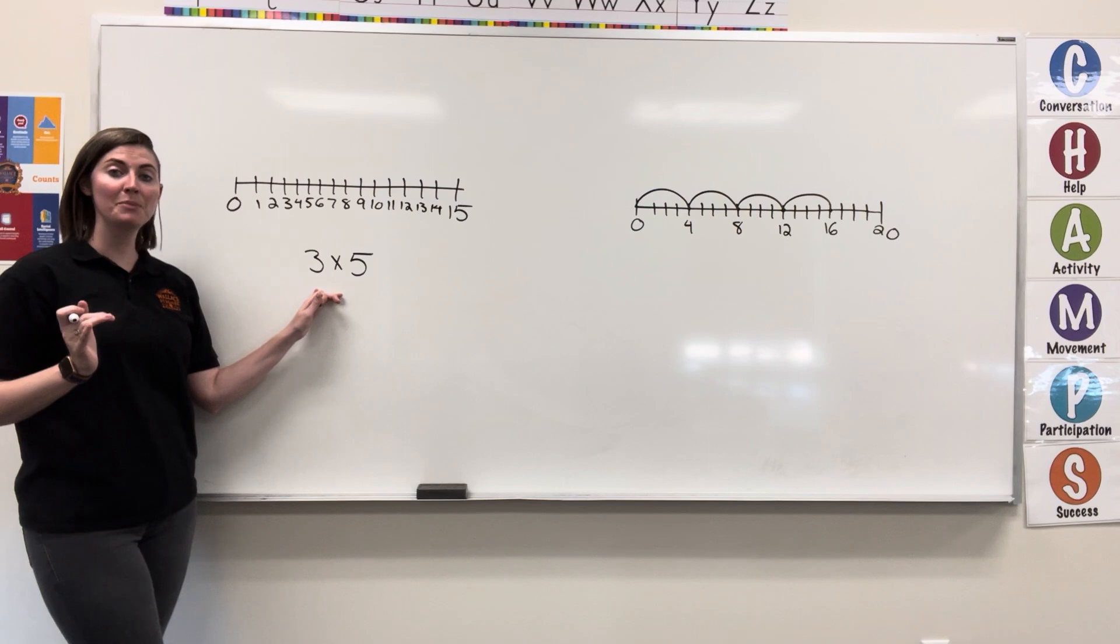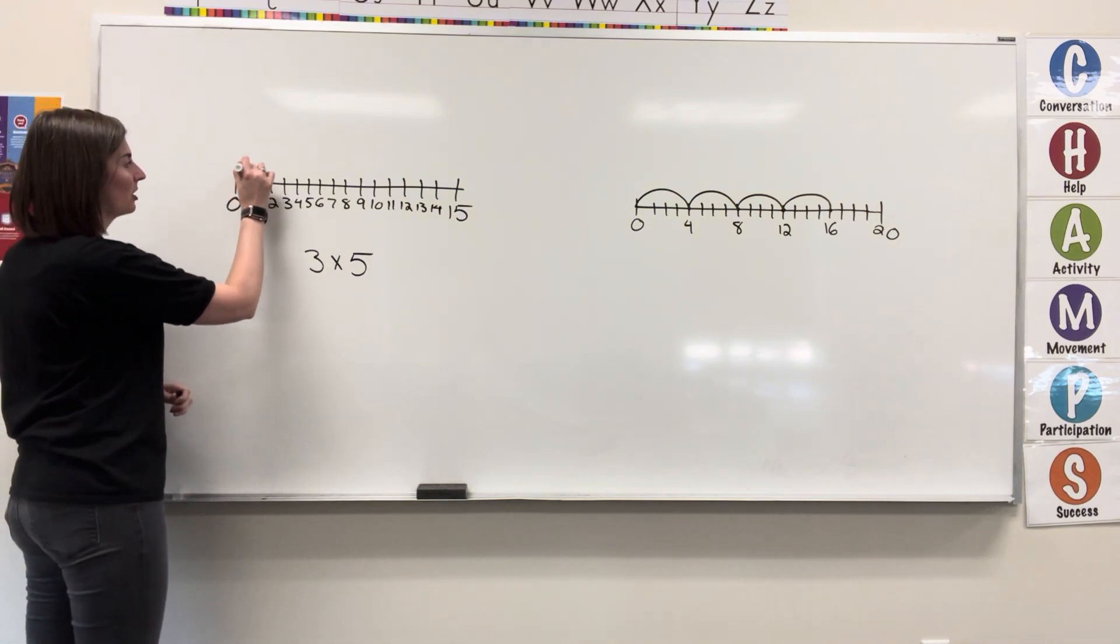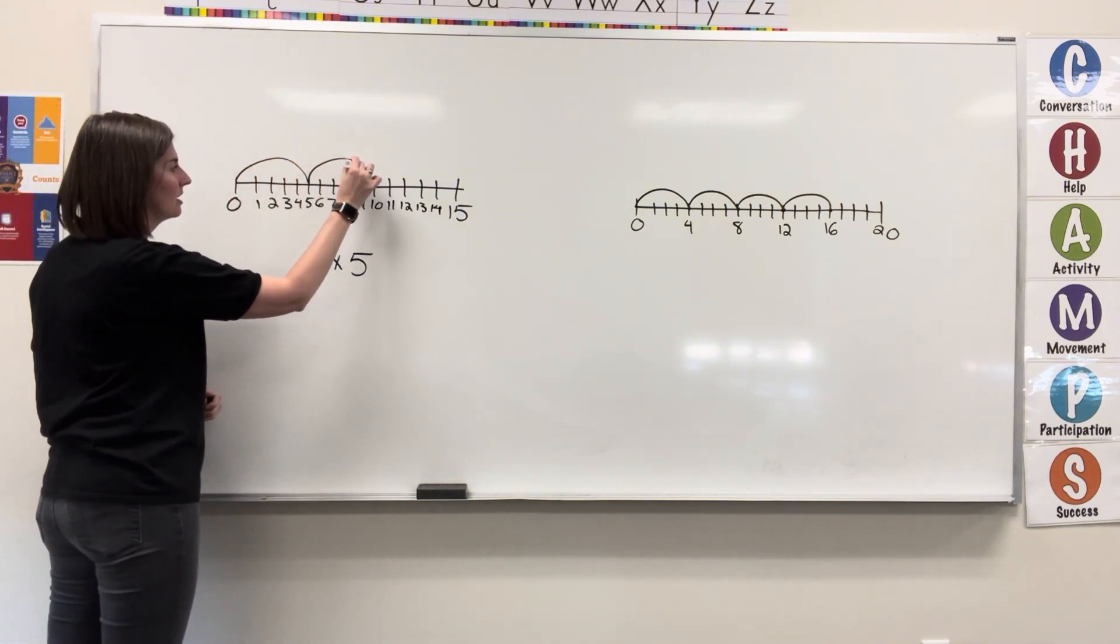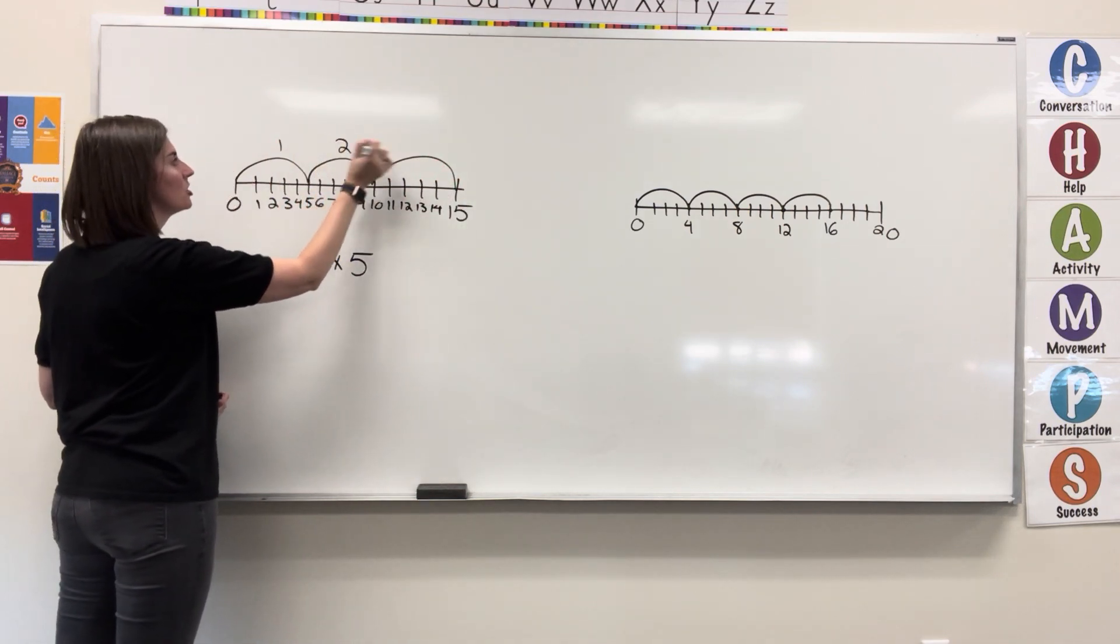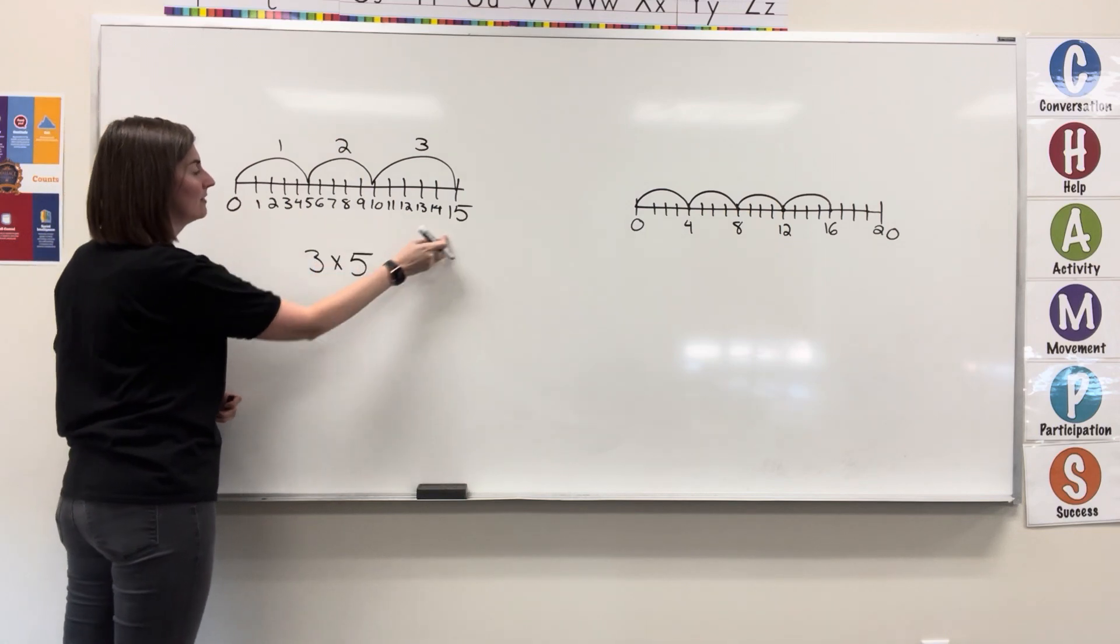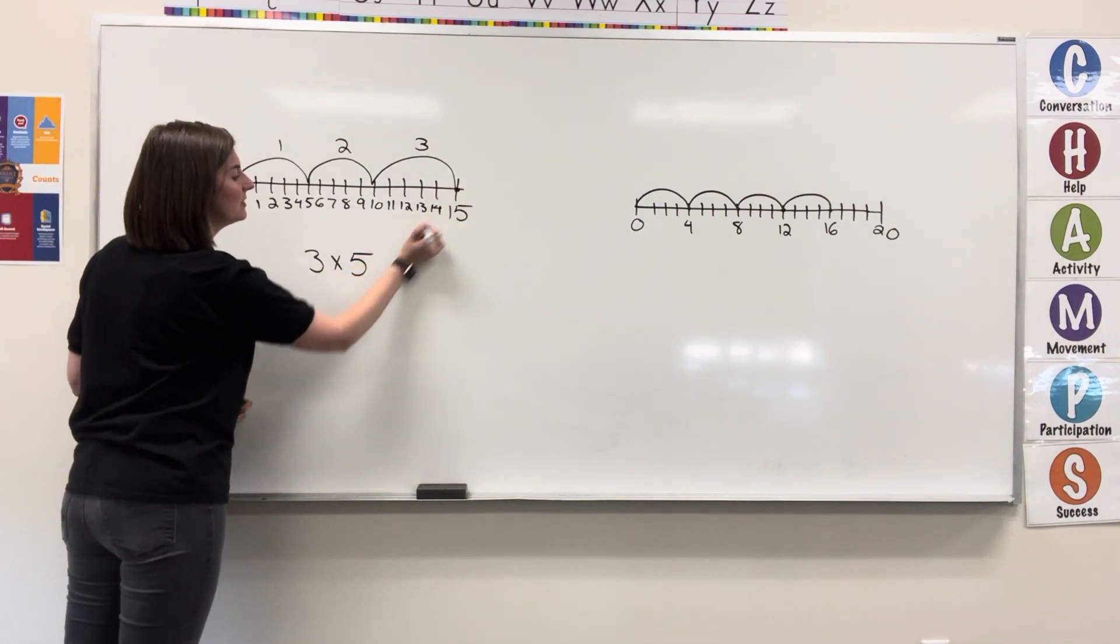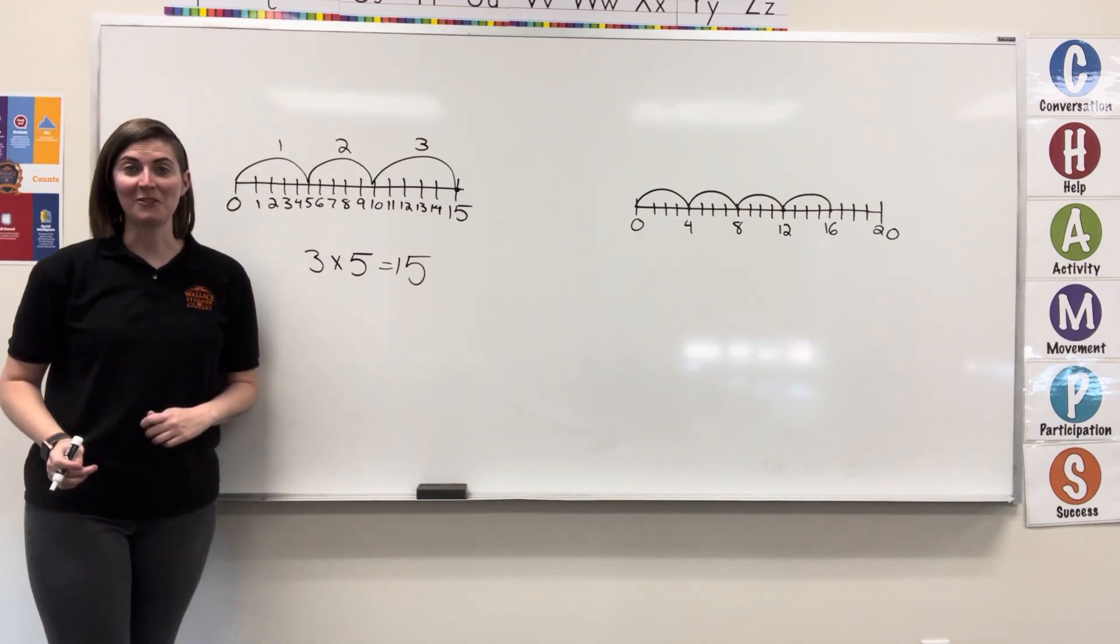So 3 jumps, each jump will have 5 in it. I'll count by 5 three times. I'm going to go 5, 10, 15. That's 1, 2, 3 jumps that each have 5 in them. I end at 15, so my answer is 15.